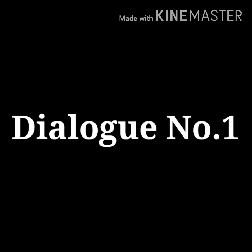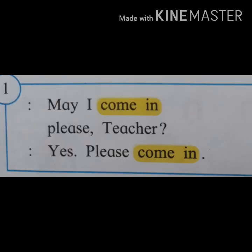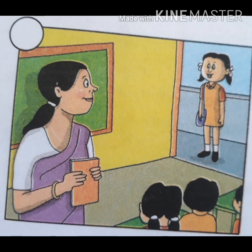Dialogue number one: 'May I come in please, teacher?' 'Yes, please come in.' In this dialogue, a student is asking permission for entering the class. Which picture will you suggest for this dialogue? Correct. This is the suitable picture and you should write one like this.